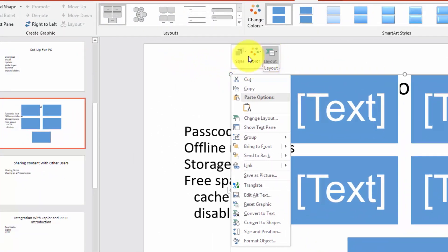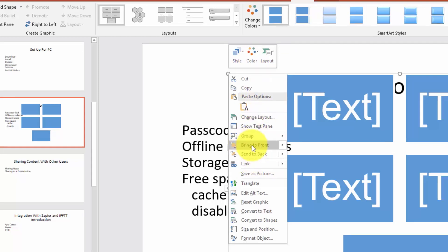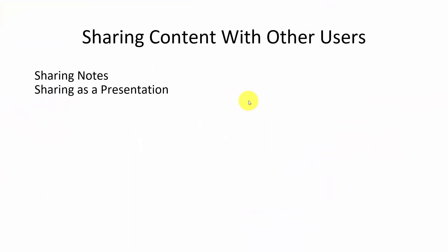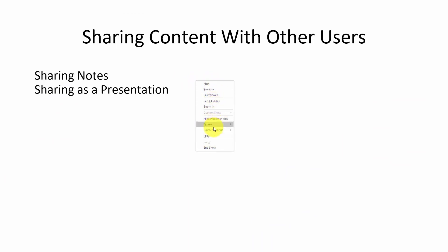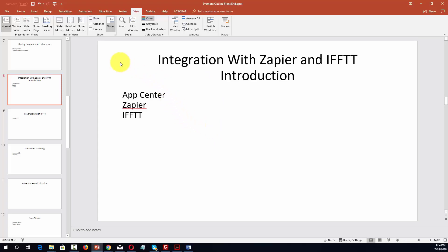You'll notice that you get a different set of choices that you can make about this particular item. You'll also be able to make different choices in the menu brought up by your right-click. When you are doing an actual presentation, you can right-click on that presentation and you'll get a different set of options that you can use when you are presenting.